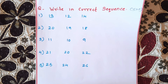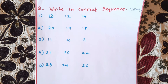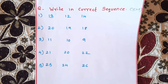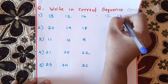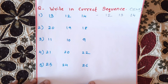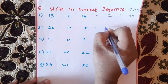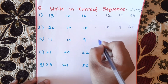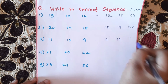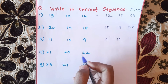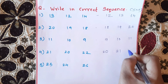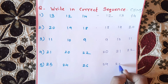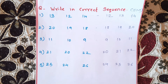The next question is: Write the correct sequence. This has 5 marks for 5 questions. For example: 12, 13, 14 — write in correct sequence. Next: 18, 19, 20. Next: 9, 10, 11. Next: 20, 21, 22. Next: 24, 25, 26.